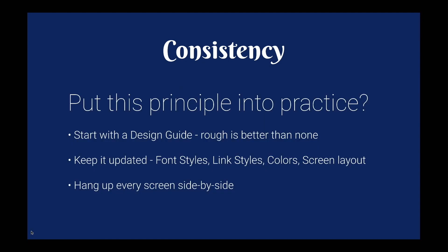So how do we put this principle into practice? Start with a design guide — rough is better than none at all. Even if you just take a screenshot of each new button type and stick it in a Google doc, it doesn't have to be pretty or fancy. If you have designers on your team, they'll probably have design guides already. Another thing that's hugely useful is hanging every screen you create side by side on a wall. Seeing all the screens side by side is a great way to pick out inconsistencies in the UI.